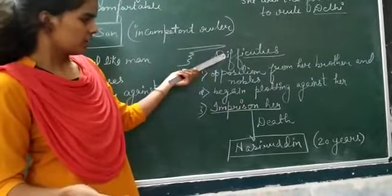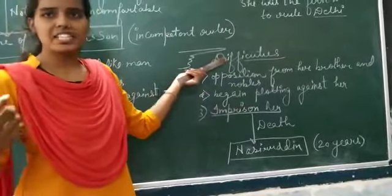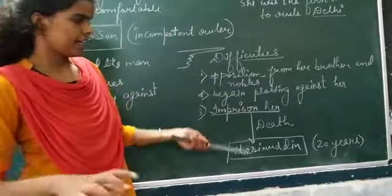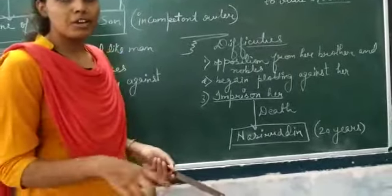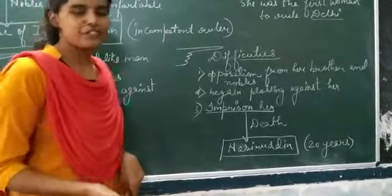When Razia died, many weak successors came to rule. And in our next video, we will discuss Nasruddin Balban who came to rule after Razia.